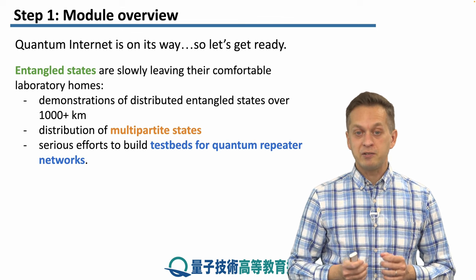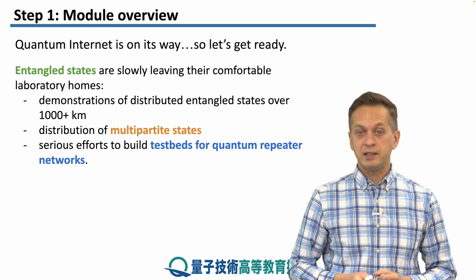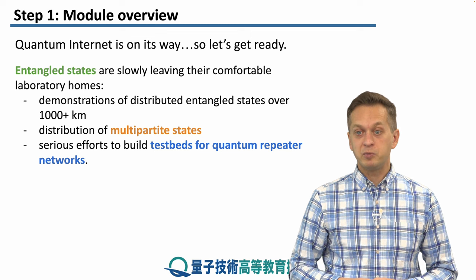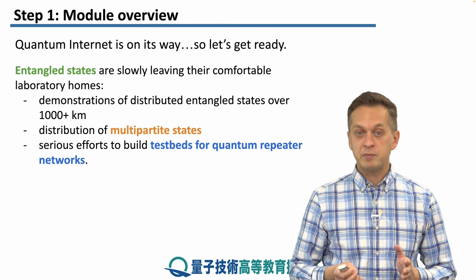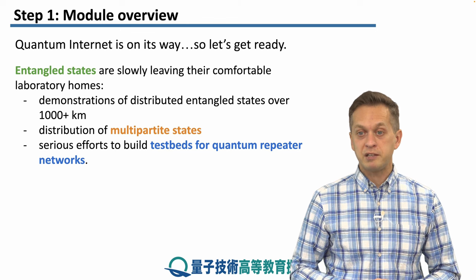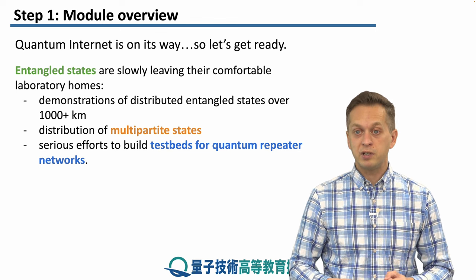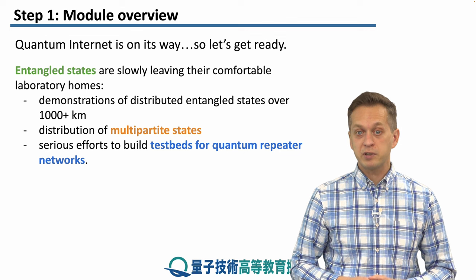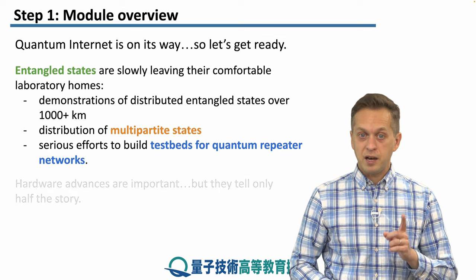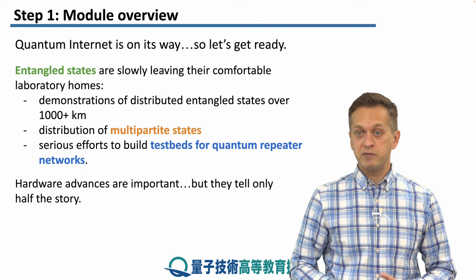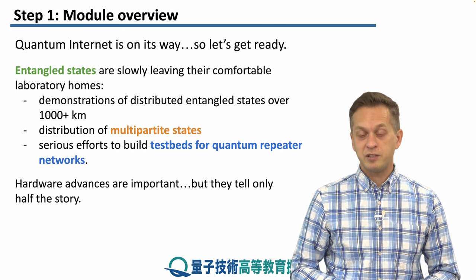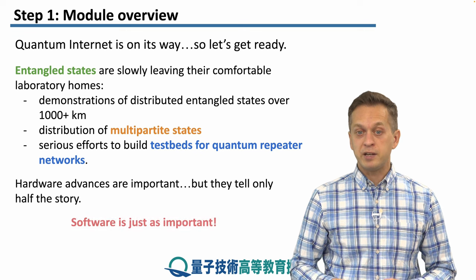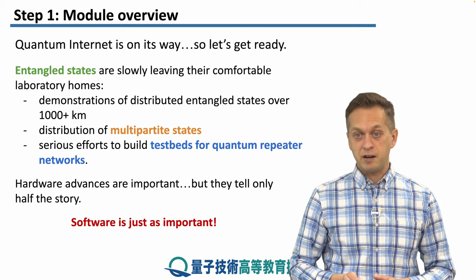People are now seriously thinking about building testbeds for quantum repeater networks. The hardware is at a point where it seems feasible and reachable within the next couple of years to build real small quantum networks where we can test this hardware. But hardware is only half the story — one of the main messages we're trying to get across in this module is that software is equally as important as hardware.